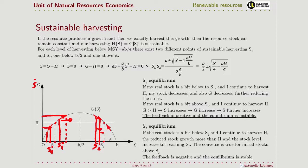And the same if I start from a level of stock higher than S2, for example here, S2 comma, it will move over the equilibrium. So in the case of this equilibrium compatible with my harvesting on the left side of the half is unstable, while the equilibrium point on the right side is stable.